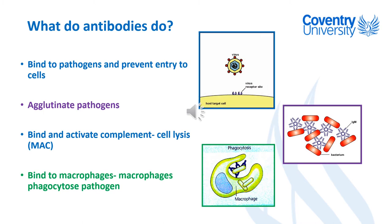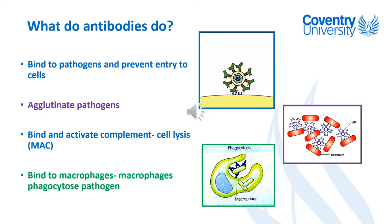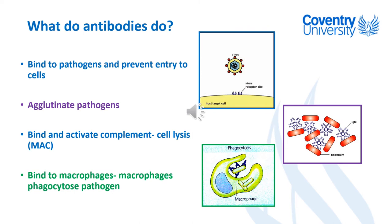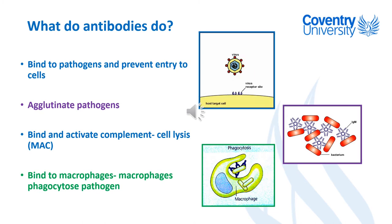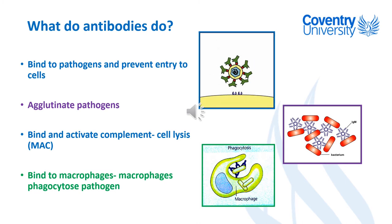A really important thing to remember: antibodies themselves can't kill things. However, the cells that produce antibodies will stay in your body and remember, so if you come into contact with the same pathogen again, lots and lots of antibodies will be produced very quickly. All these processes which help to remove that pathogen will be very rapid, and hopefully that pathogen will be removed before much damage can occur.